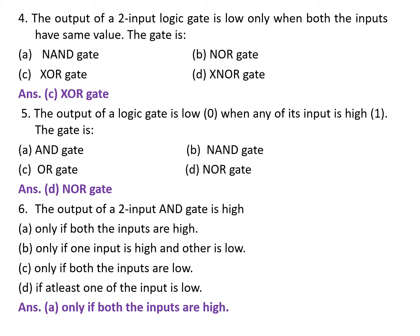Next question: the output of a 2-input logic gate is low only when both the inputs have the same value. The gate is — A. NAND gate. B. NOR gate. C. XOR gate. D. XNOR gate. The correct answer is C — XOR gate.